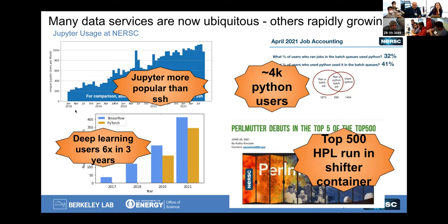This plot only starts from 2018, so 2016 was even further back. There was probably less than 100 users of Jupyter then, and now there's over several thousand. In fact, we can see from daily usage that Jupyter is actually more popular as an interface into our systems than SSH.